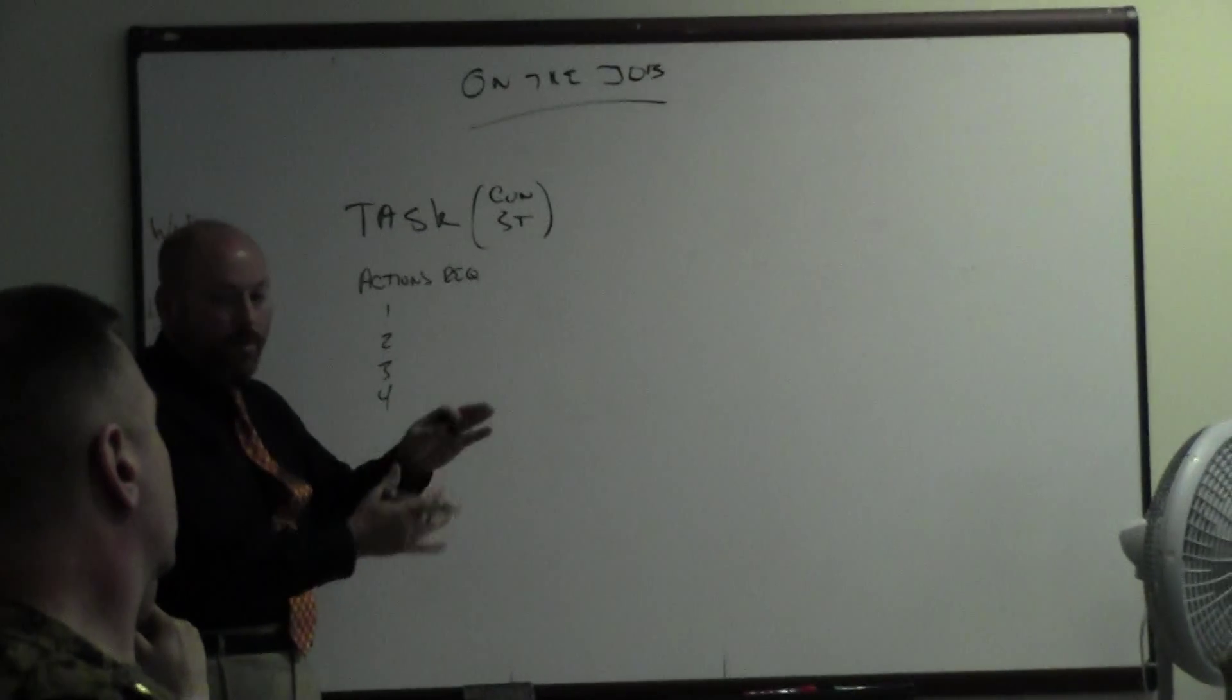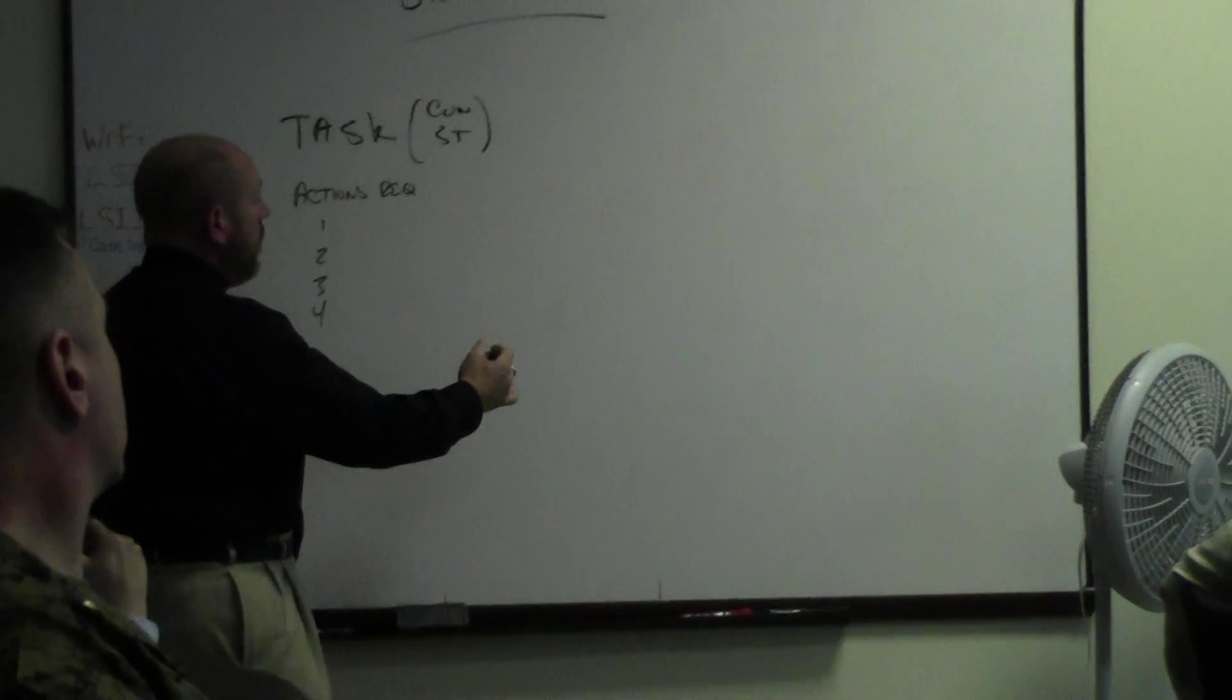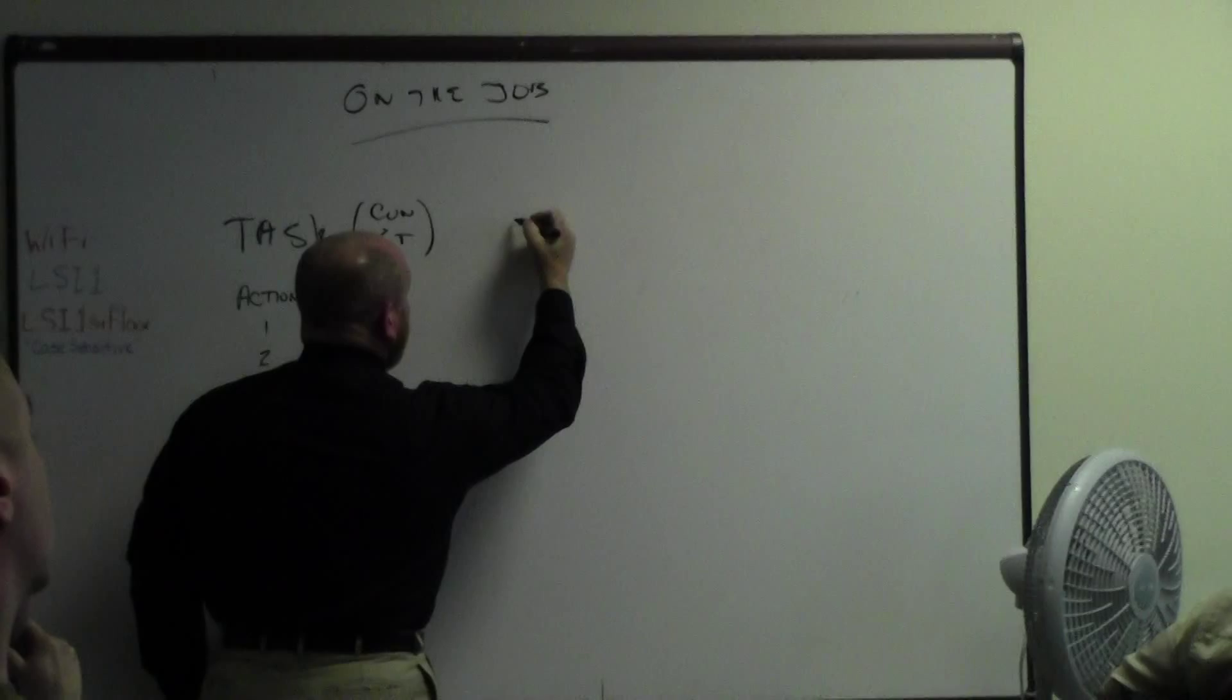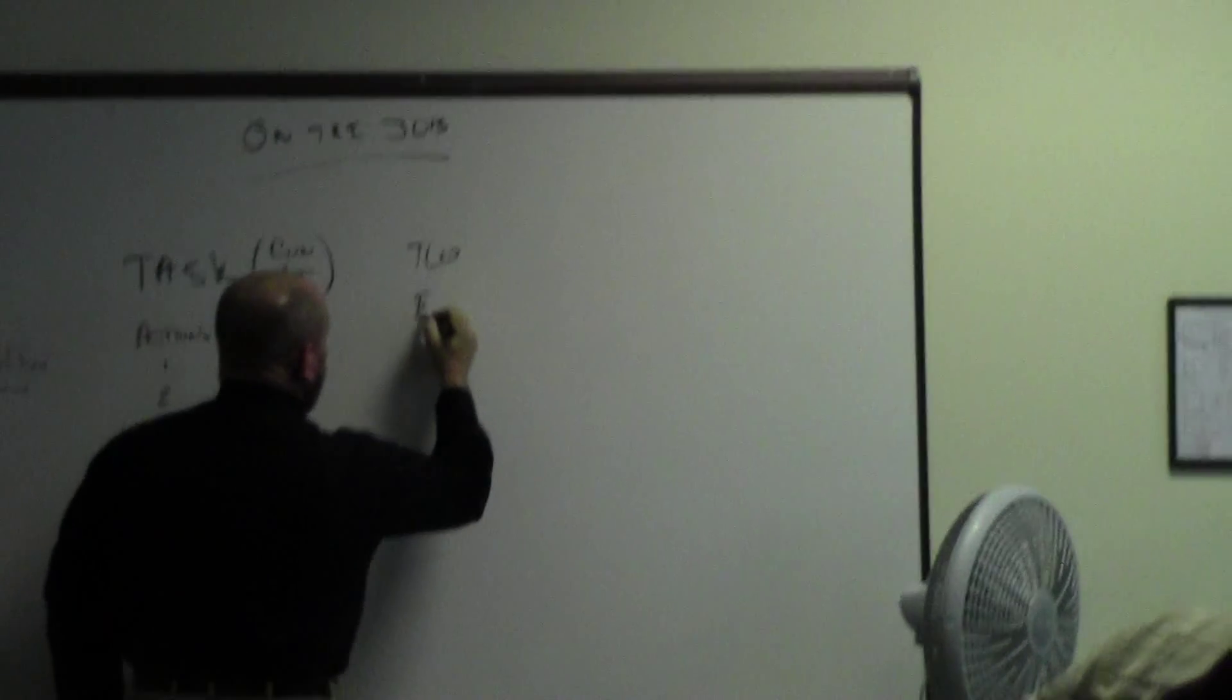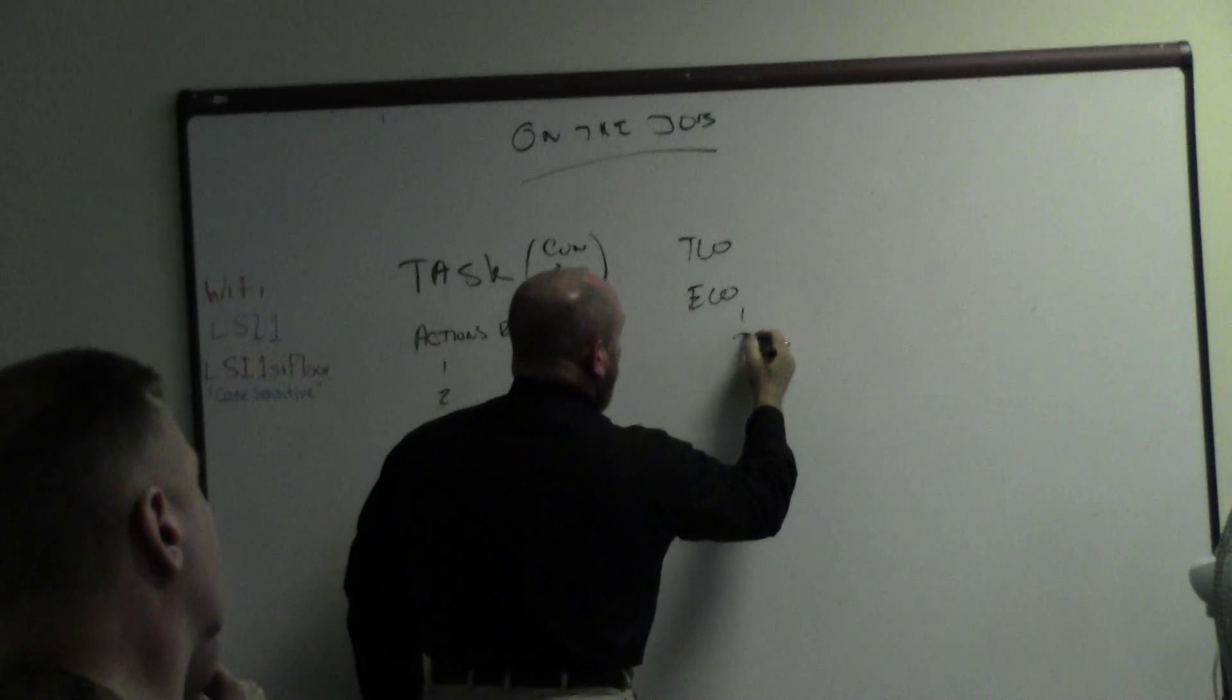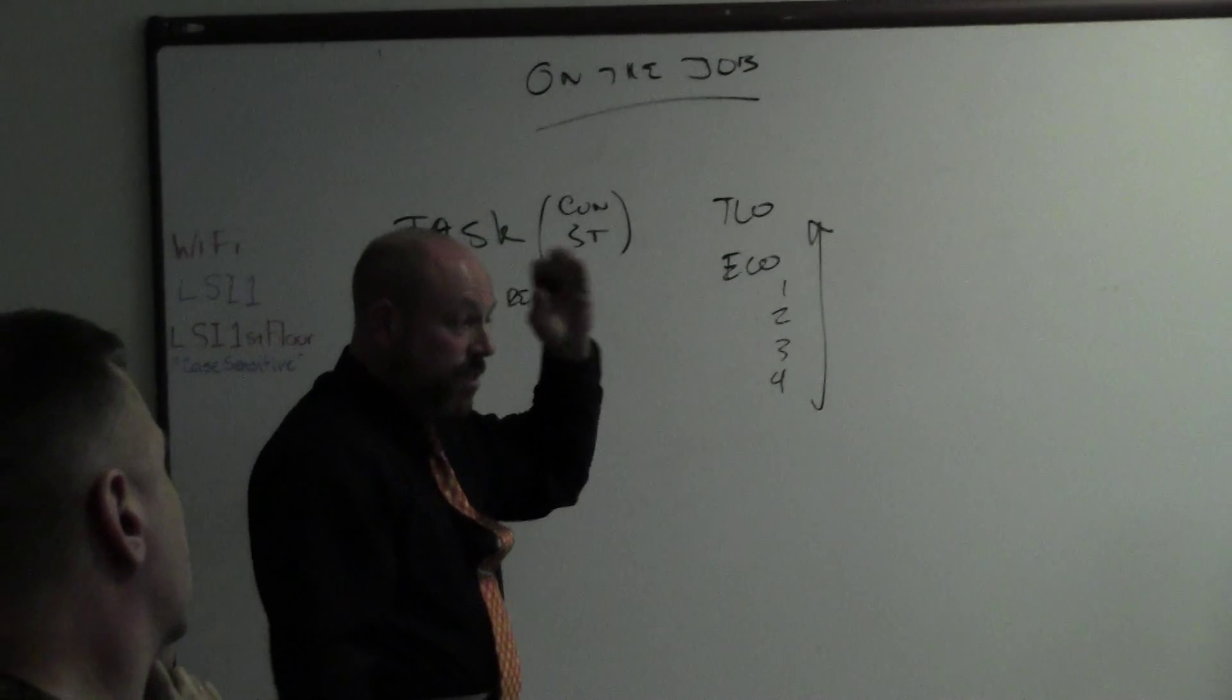And then we come up with KSAs for each of these, then we turn around and group them together, we turn into DLOs. Sometimes they're the same, sometimes they're not. So when we take it into our learning environment, we have TLOs, which is the end state, and then we have DLOs, which are the building blocks to get to this.